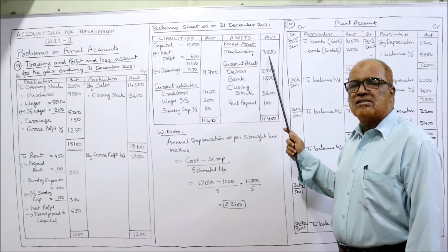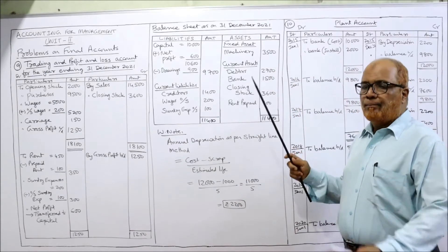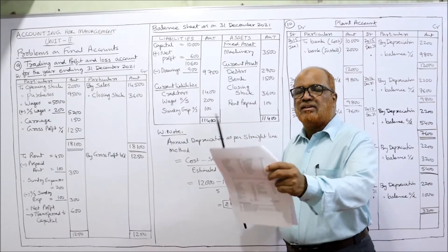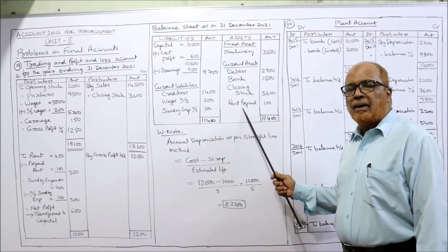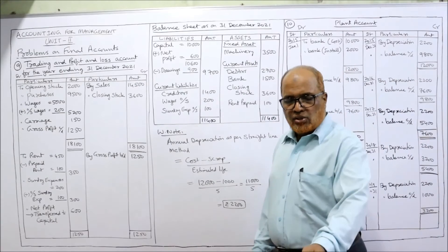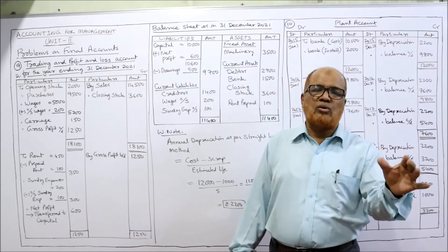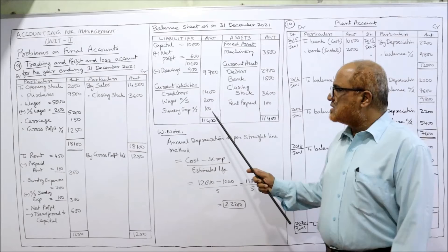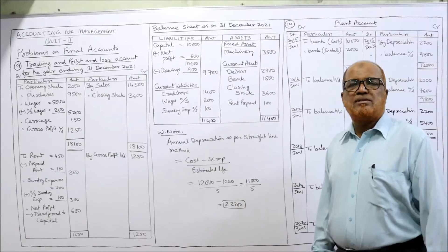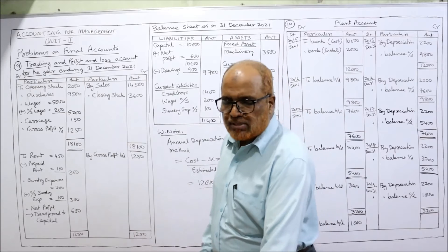On the asset side, the only fixed asset is machinery at 3,500. Current assets are: debtors 2,700, bank balance 1,500, closing stock 3,600 from the adjustment, and prepaid rent 100 from the last adjustment. If no mistakes are made, liabilities and assets must balance — and we get 11,400 on both sides, confirming our solution is correct.